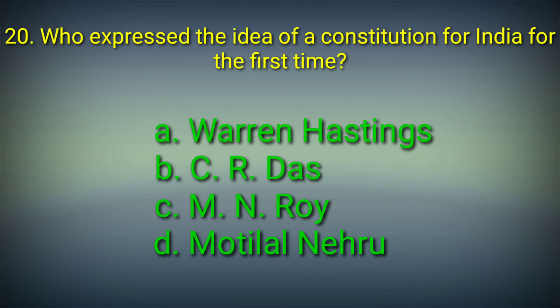20th question: Who expressed the idea of a constitution for India for the first time? Options: A. Warren Hastings, B. Ardhas, C. M.N. Roy, D. Motilal Nehru. Answer: Option C. M.N. Roy expressed the idea of a constitution for India for the first time.